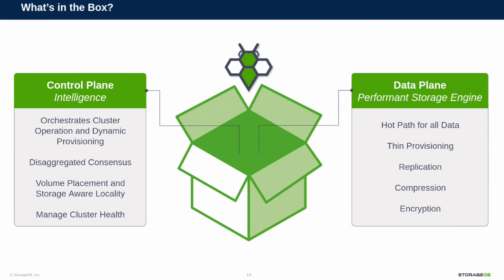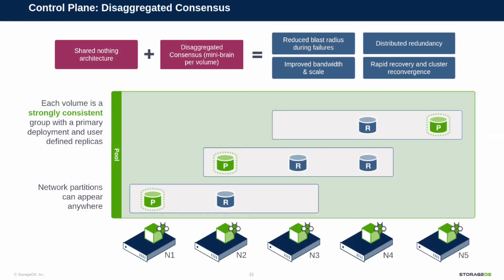Let's explore the control plane and the notion of disaggregated consensus. The fundamental observation we made when designing the control plane was that clusters are getting bigger — we see customers deploying in many tens and even hundreds of nodes. Scale is challenging: distributed consensus is a hard problem in computer science, and clusters are noisy — network partitions, transient errors, load-related issues. We need not just to scale, but to scale in a noisy environment. So we built our control plane with this principle in mind and came up with the idea of disaggregated consensus, fueled by the observation that network partitions can appear anywhere within a cluster.